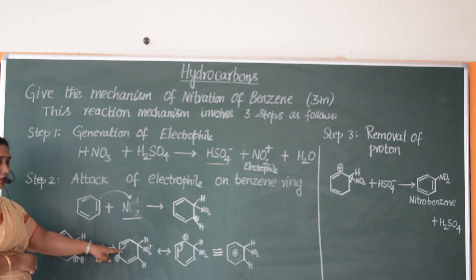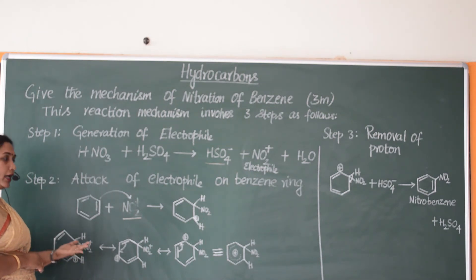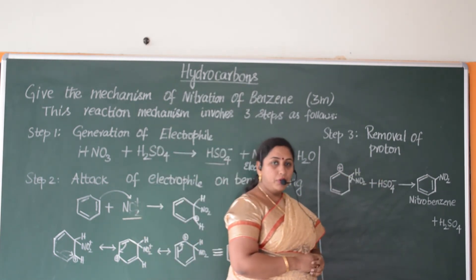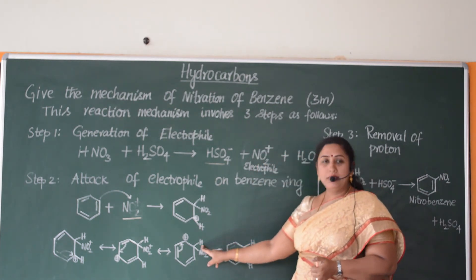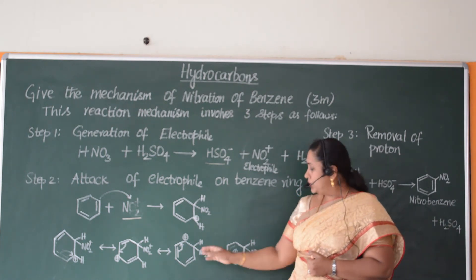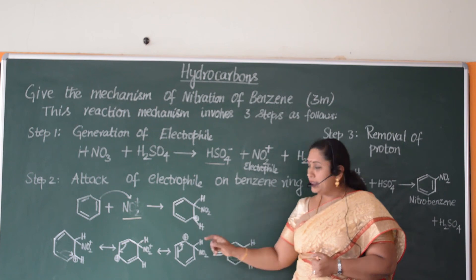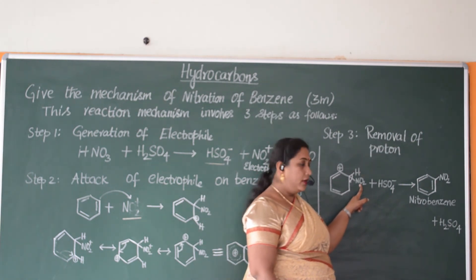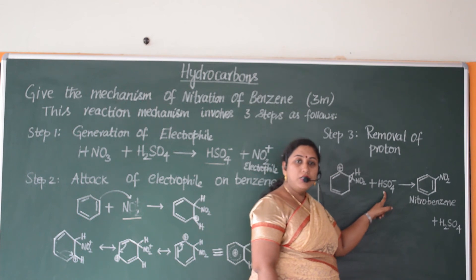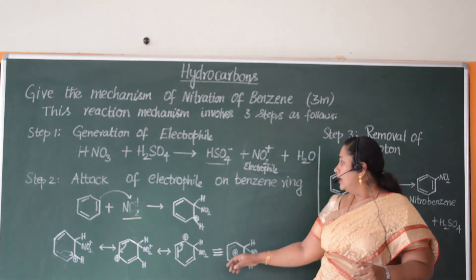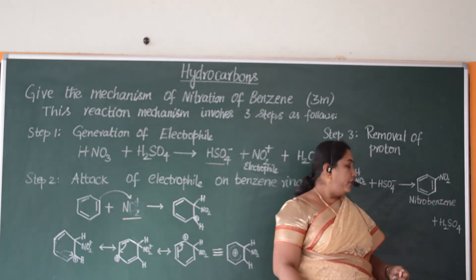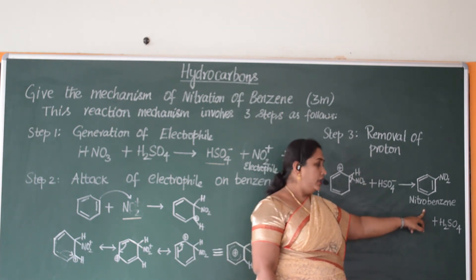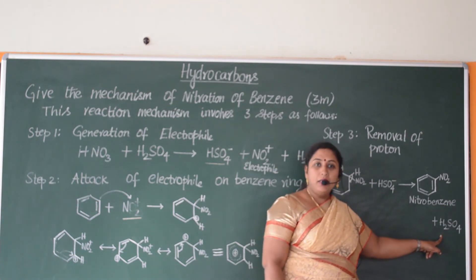Now let us come to the third step: removal of proton. The proton H will be removed in the form of H⁺ by shifting the electron cloud back onto the benzene ring, as you can see here. The removal of proton is facilitated by HSO4⁻ — the nucleophile generated in step 1 — which removes the proton from the benzene ring, resulting in the formation of nitrobenzene along with the regeneration of H2SO4, our starting material.